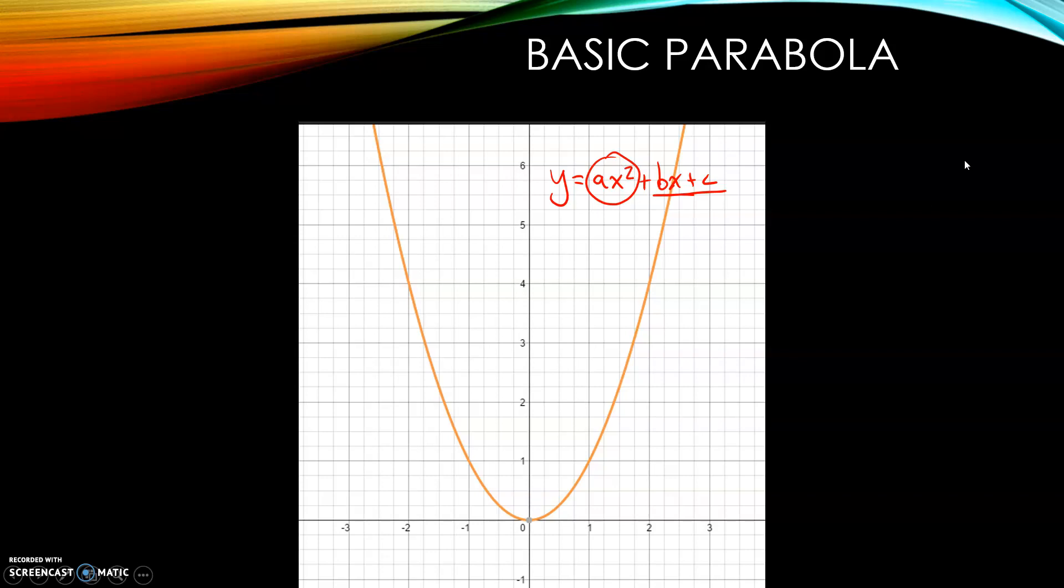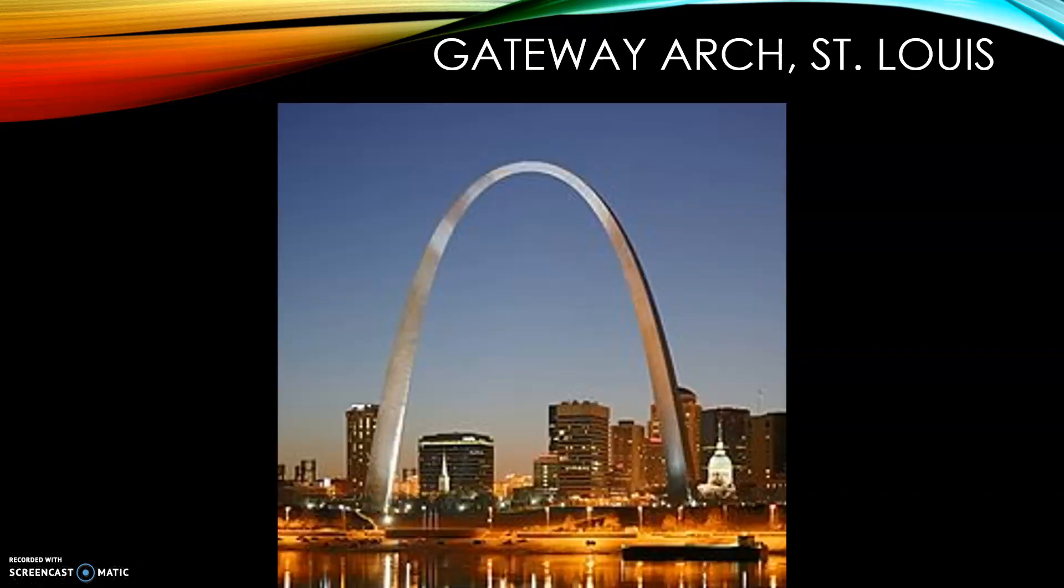And so where do we actually see this? Well we see this in the Gateway Arch in St. Louis. This is actually called an inverted catenary which is slightly different, but for all intents and purposes it is a parabola.